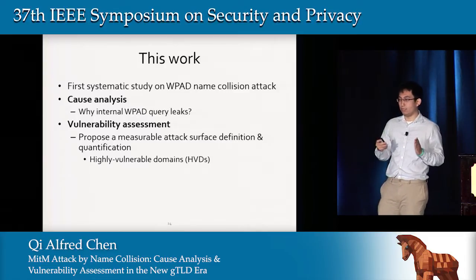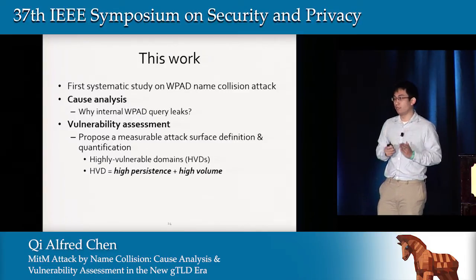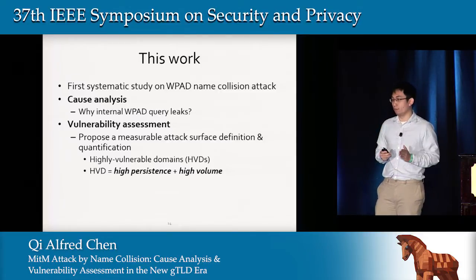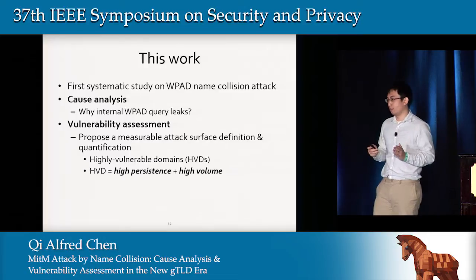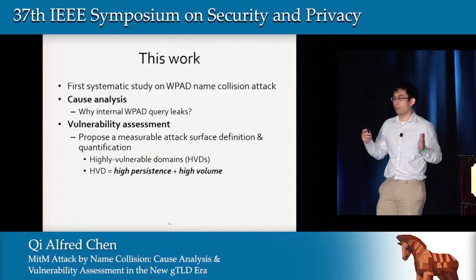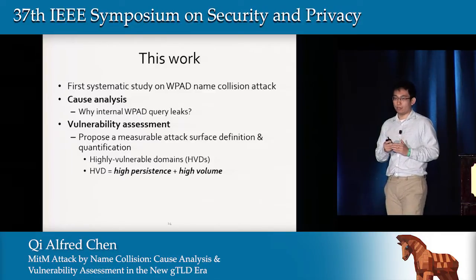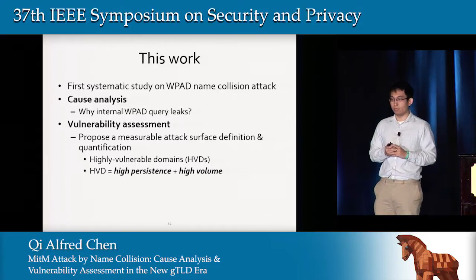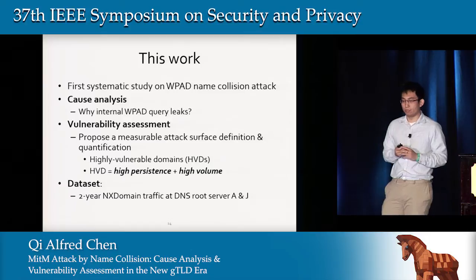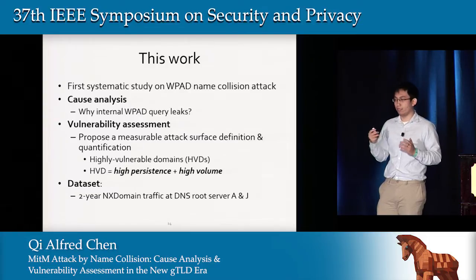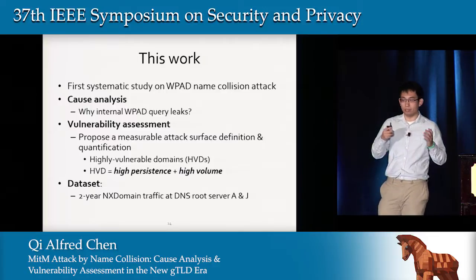HVDs need to have high leakage persistence — for example, WPAD queries leaked every day — and high leakage volume, so that once these domains are registered, large numbers of victims can be continuously exposed. HVDs represent quantifiably attractive targets for adversaries. To perform this analysis, we use a dataset of two-year NX domain traffic collected at DNS root server ANJ, which captures leaked WPAD queries.